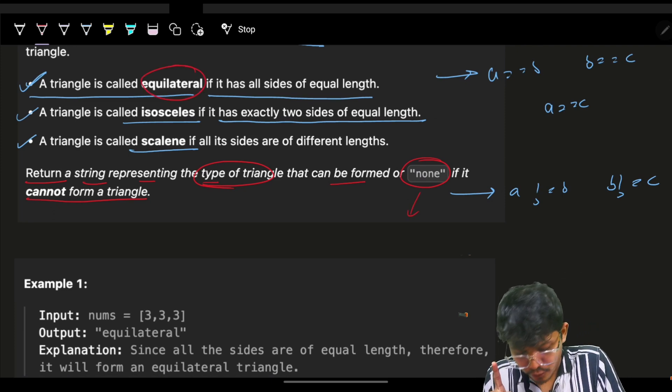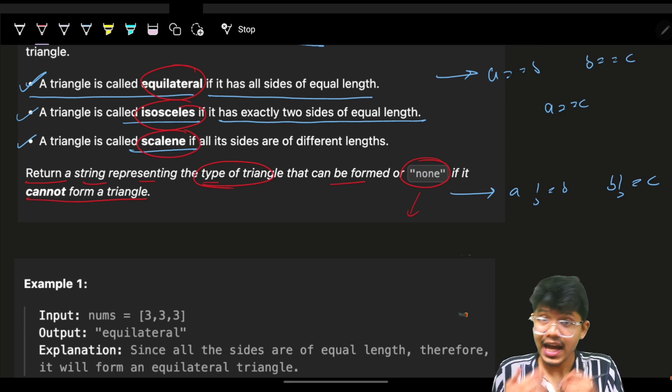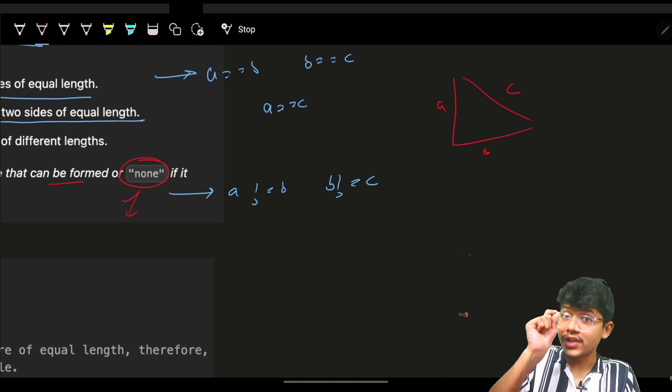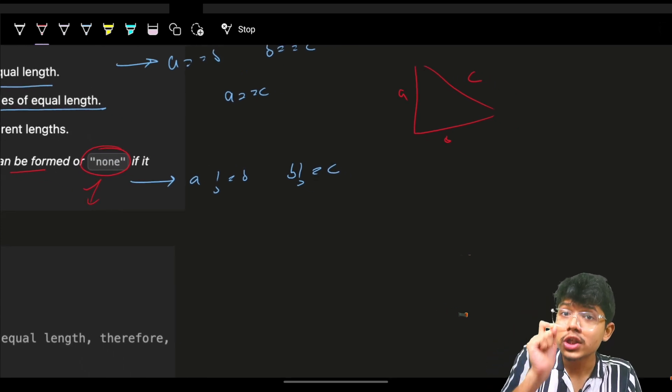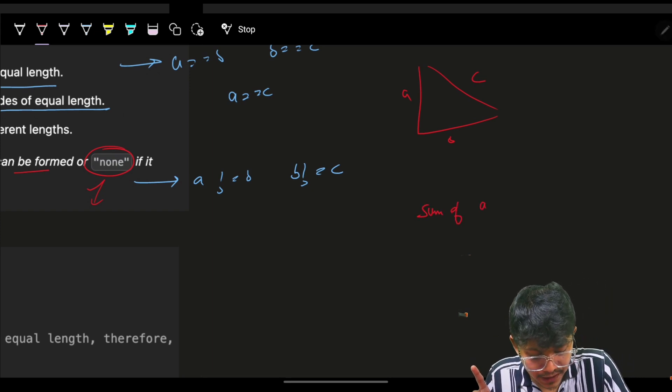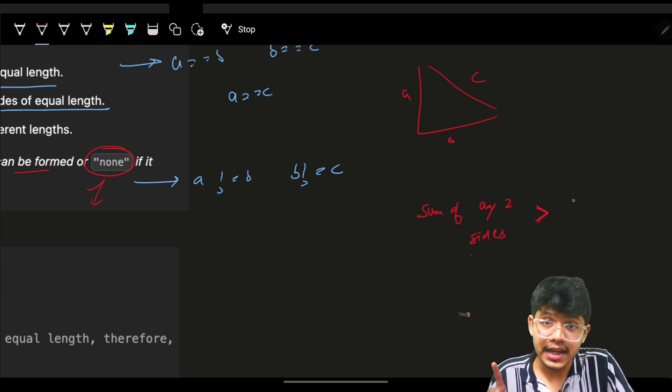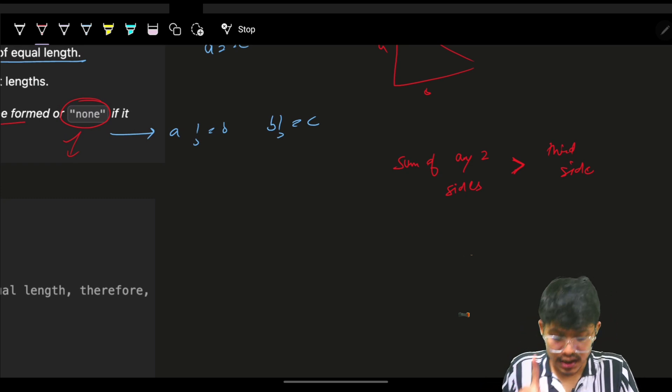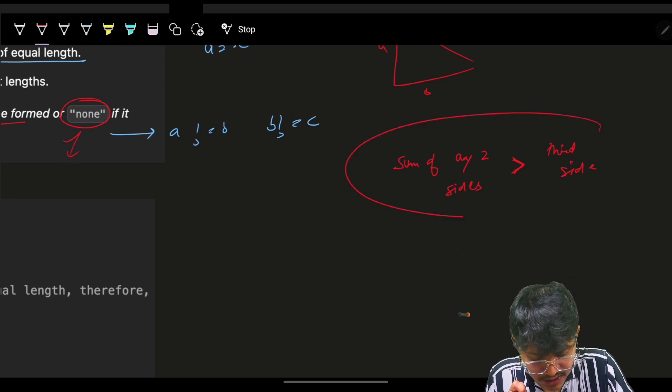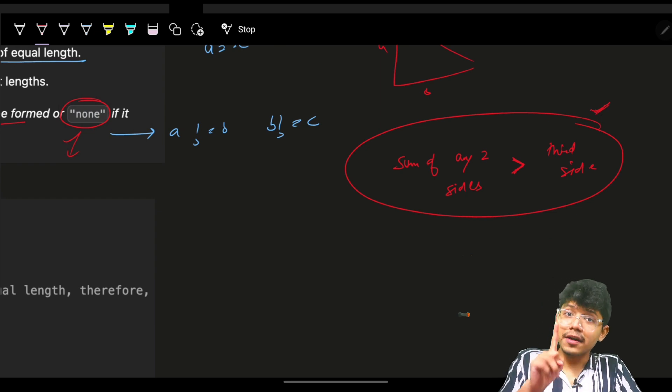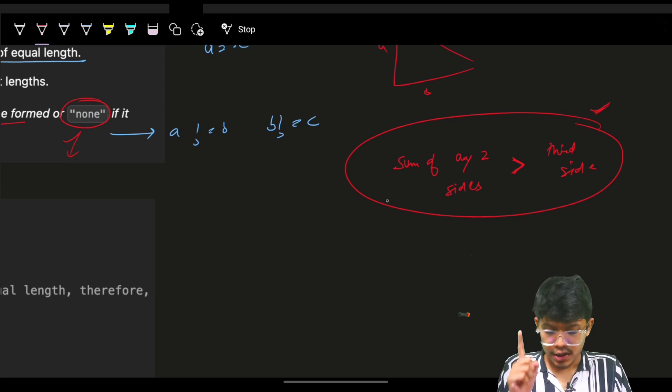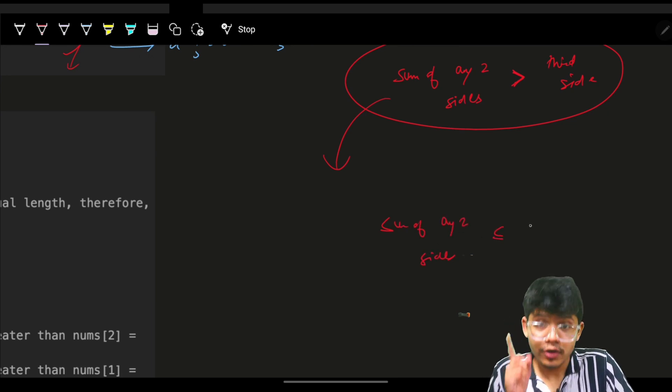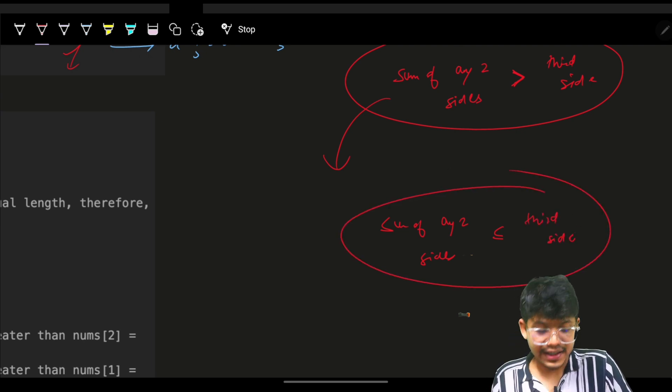So cannot form a triangle. They have given what is the condition of equilateral, for isosceles they have given, for scalene they have given, but they have not given the condition for none. So remember this fact, the condition of none is, which means you can form a triangle only and only when the sum of two sides, sum of any two sides, sum of any two sides should be more than the third side. Again, I'm not saying more than equal to, it is more than the third side. Then I actually can say that the triangle can be formed. If the sum of two sides is more than my third side, then my triangle can be formed. So what can be the contrary for this? Contrary can be that if sum of any two sides is less than or equal to my third side, then my triangle cannot be formed.